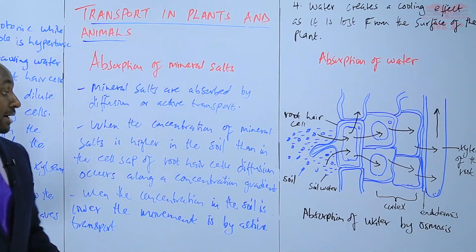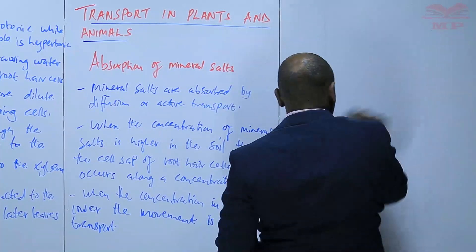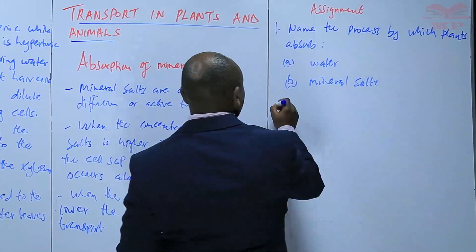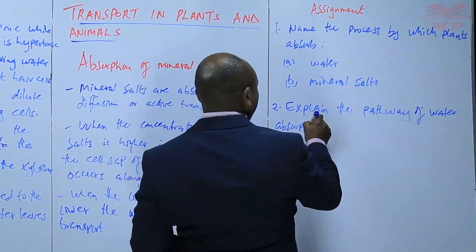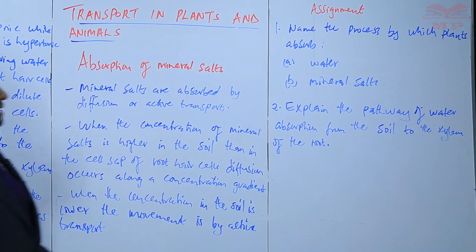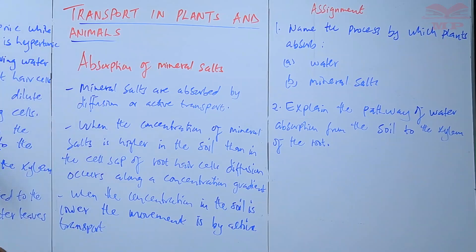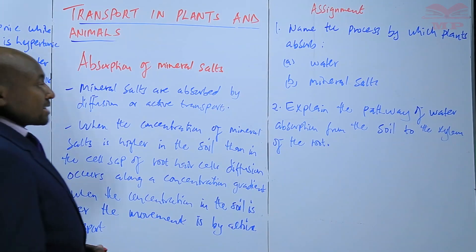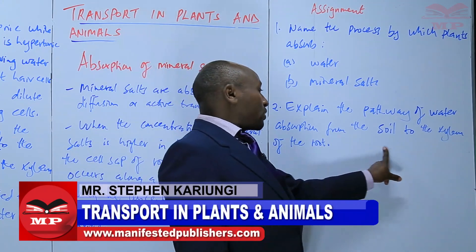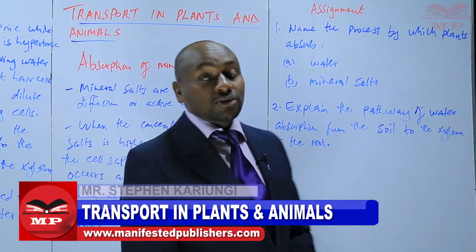We're going to stop there and have an assignment. Question one: name the process by which plants absorb (a) water and (b) mineral salts. Question two: explain the pathway of water absorption from the soil to the xylem of the root. We're going to stop there until the next lesson. Goodbye.